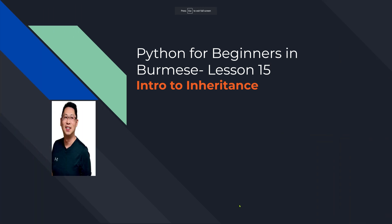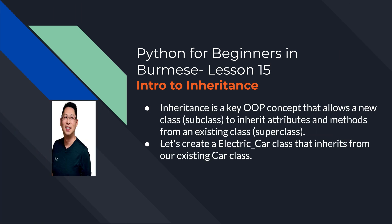Inheritance is a key OOP concept that allows a new class to inherit attributes and methods from an existing class. The new class is called a subclass, and the existing class is called a superclass. Now let's create an Electric Car class that inherits from our existing Car class.